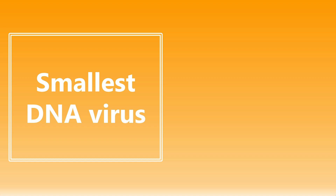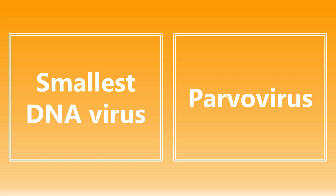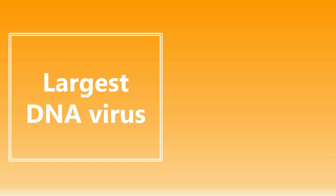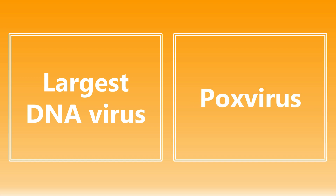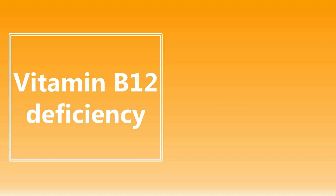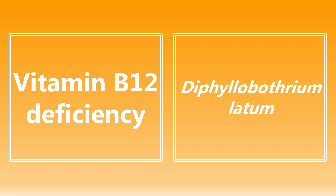Some other quick facts they may ask on the exam: the smallest DNA virus is the parvovirus, and on the other side, the largest DNA virus is the pox virus. Next: vitamin B12 deficiency — this is super testable; I am still seeing this on my emergency medicine boards. The organism primarily associated with a vitamin B12 deficiency is Diphyllobothrium latum. You absolutely want to know this and make that association.